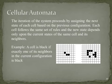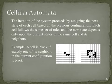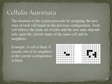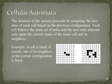For example, the iteration of the system proceeds by assigning the next state of each cell based on the previous configuration. Each cell's new state depends only upon the current state of the same cell and its neighbors. For example, a cell is black if exactly one of its neighbors in the current configuration is black. This illustrates one step in the evolution of a cellular automaton.